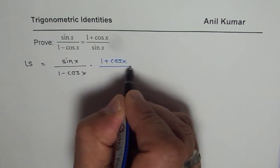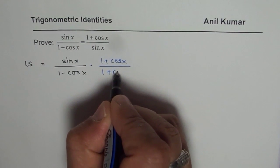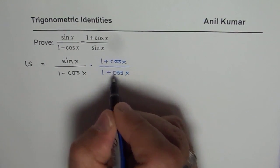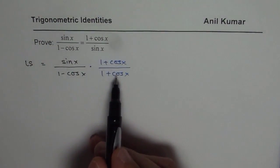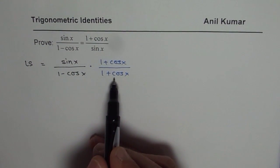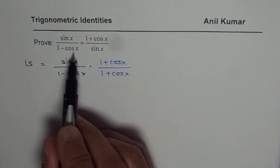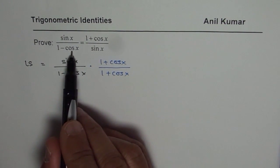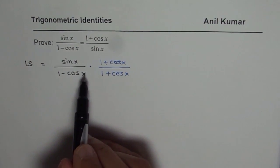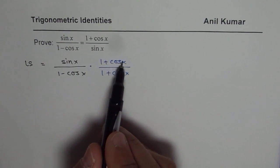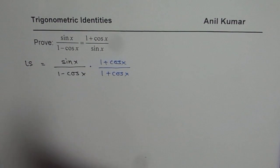Now, you just cannot multiply. You have to divide also by the same thing, which you can do, and that is as good as 1. So, multiplying and dividing by the same number is perfectly fine, right? So, sin x divided by 1 minus cos x, which is in the left side, is same as sin x divided by 1 minus cos x times 1 plus cos x divided by 1 plus cos x.